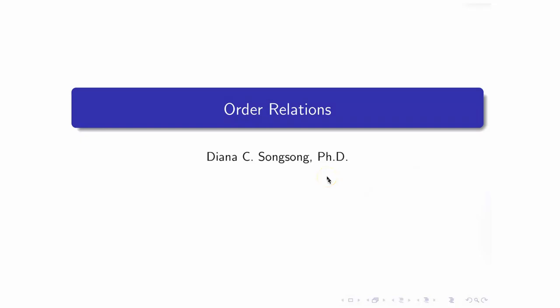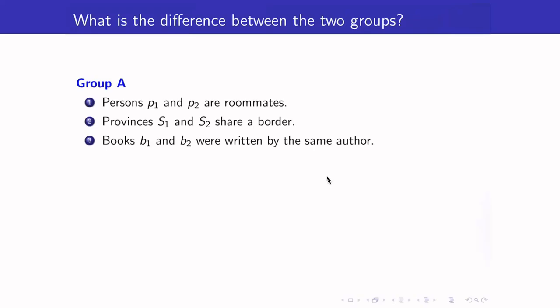In this video lecture, we are going to talk about order relations. Let us first look at the difference between these two groups. This is Group A. Here the relation is that persons P1 and P2 are roommates. Another relation would be S1 and S2 — two provinces share a border. The last relation is that two books are related whenever they are written by the same author.